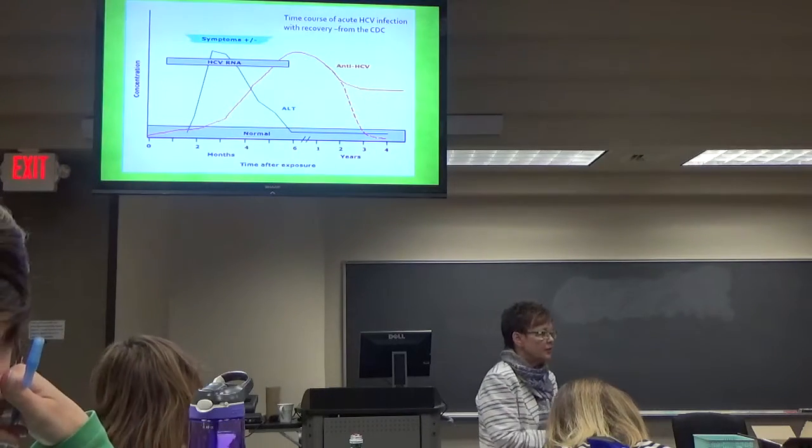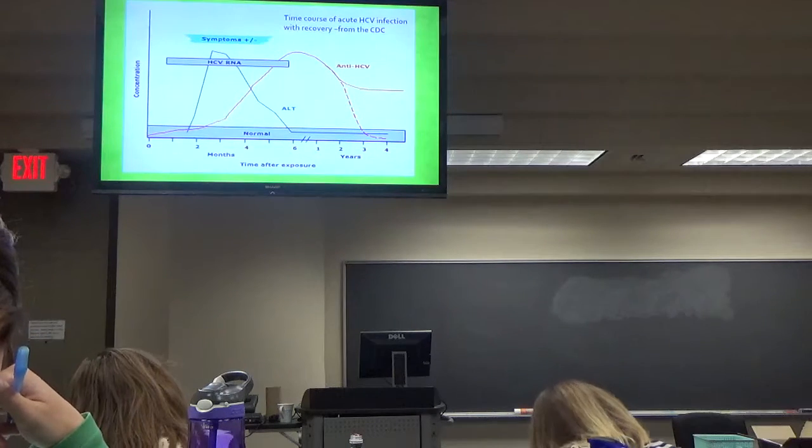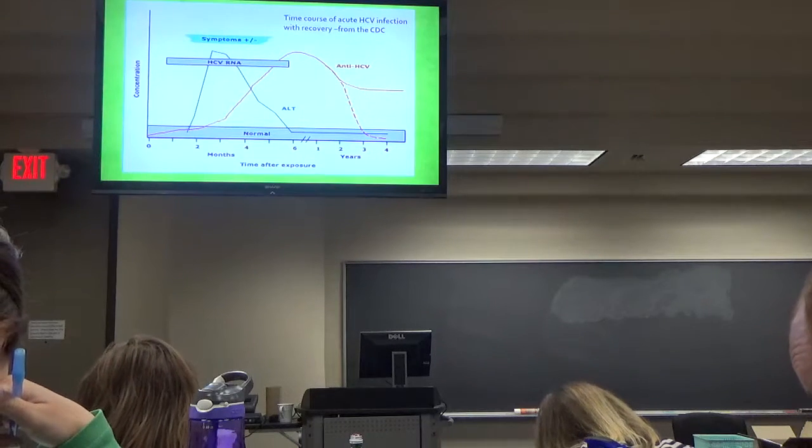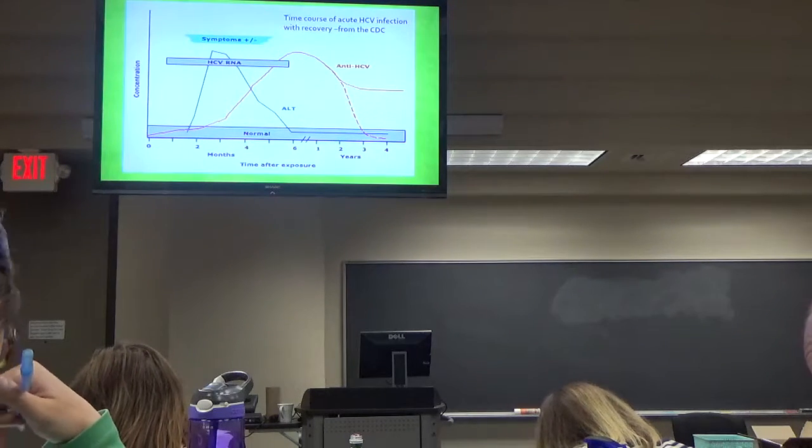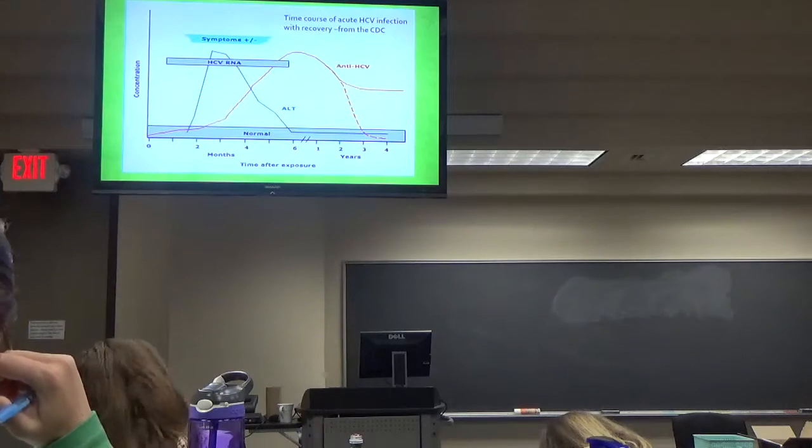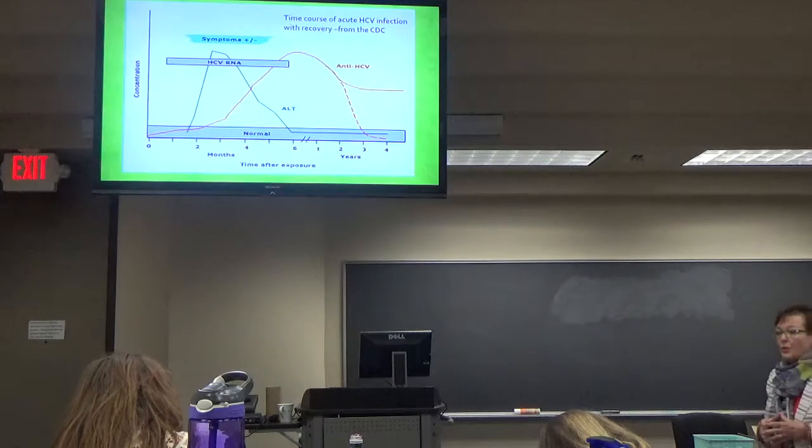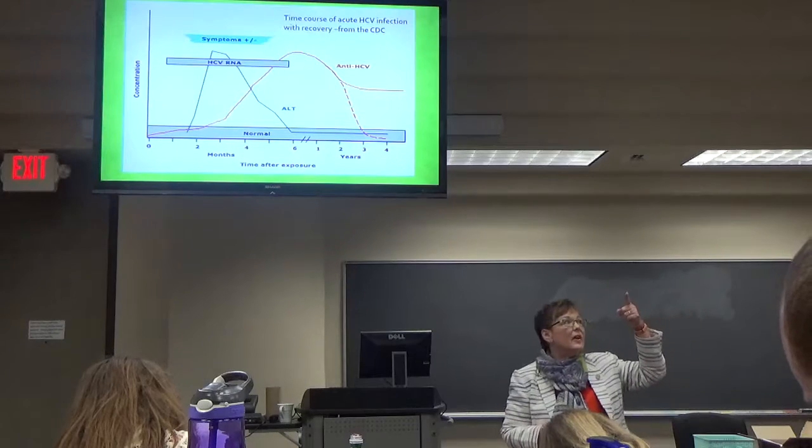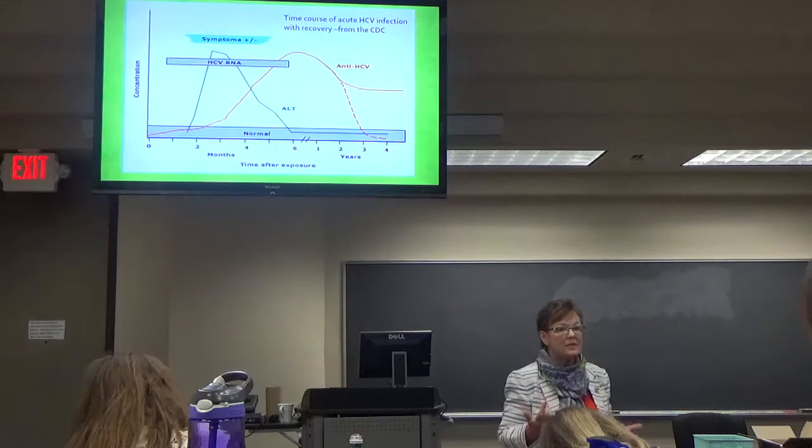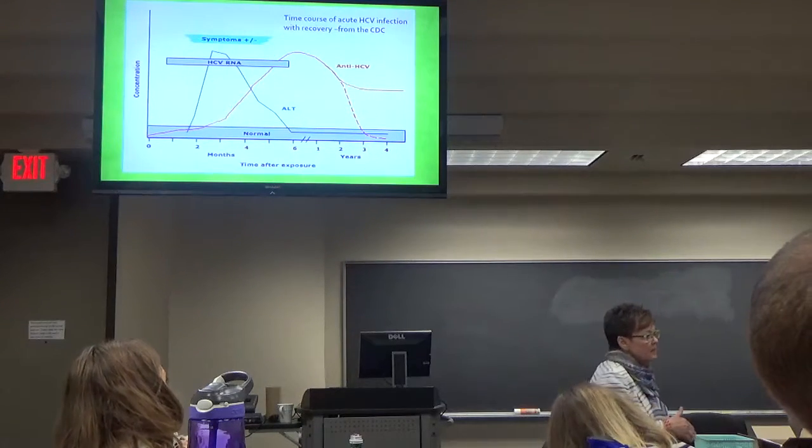So antibodies last a long time because they tell you that they've been exposed, right? They'll tell you there's been an infection. So it's important where the person is and what you expect to see. So if they're acutely ill, transaminases will be high. You're very likely to see the RNA assay come back positive. But you may not see antibodies.